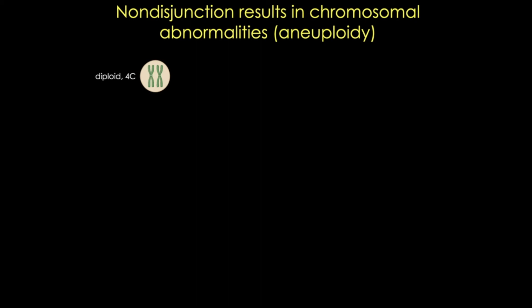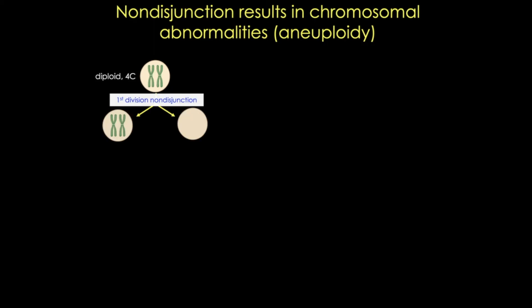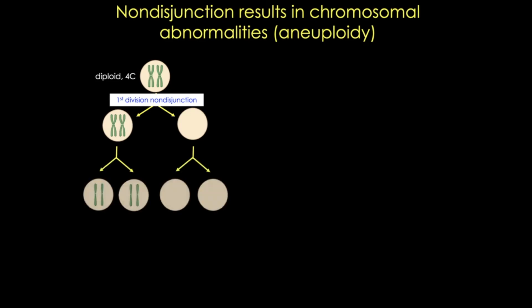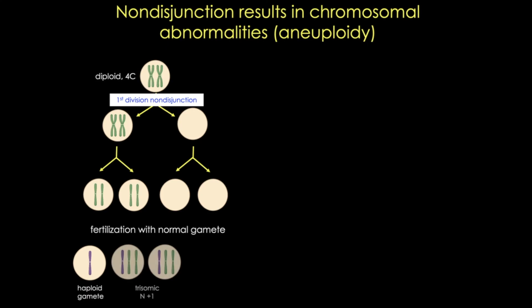So if we start with this diploid cell, normally the chromosome pairs are going to separate in meiosis I. However, in non-disjunction, this fails to happen. The result is gametes that have abnormal numbers of chromosomes. Upon fertilization with a normal gamete, the results will be either trisomy — where the haploid gamete will fuse with a gamete that has two copies of chromosomes — or monosomy, where the normal gamete fuses with a gamete that's lacking the chromosome.